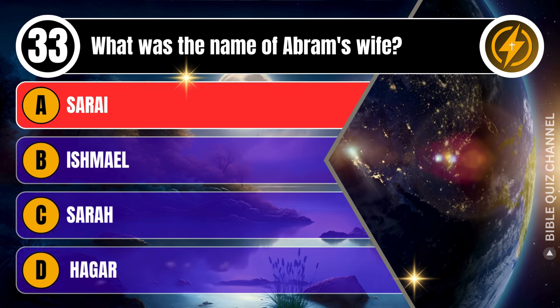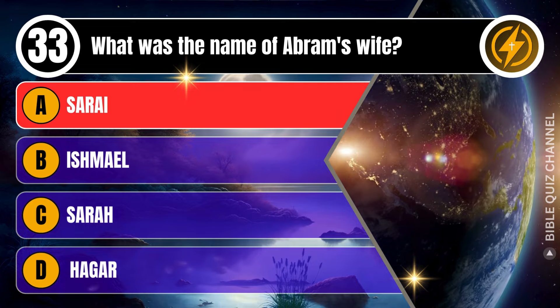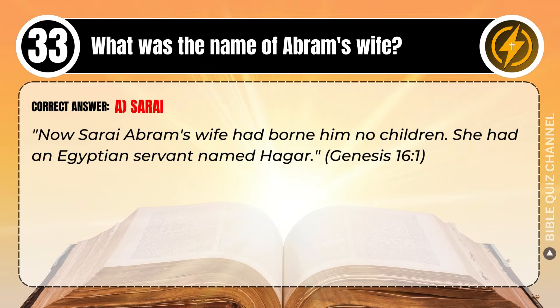Correct answer: A. Sarai. Explaining the Bible — Now Sarai, Abram's wife, had borne him no children. She had an Egyptian servant named Hagar. Genesis, chapter 16, verse 1.